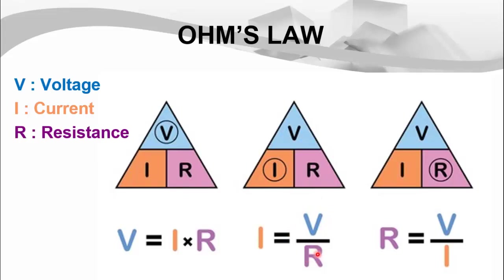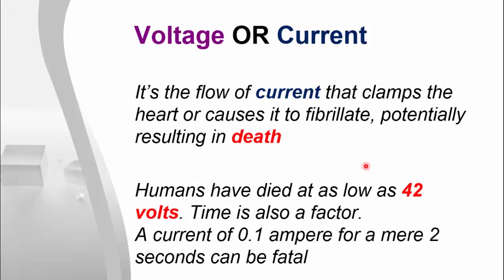It is basically current that causes an electric shock — that clamps the body or attacks the heart, potentially resulting in death. But which quantity causes an electric current to flow through a human body? And this is the voltage. We will now see what is the minimum level of voltage that causes the minimum amount of current that results in an electrical shock.